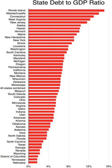The idea of 'dual sovereignty' or 'separate sovereigns' is derived from the Tenth Amendment to the Constitution, which states that 'the powers not delegated to the United States by the Constitution, nor prohibited by it to the states, are reserved to the states respectively, or to the people.'